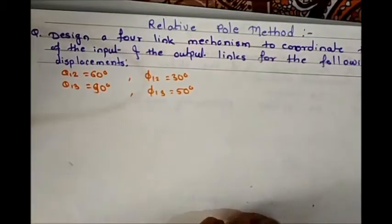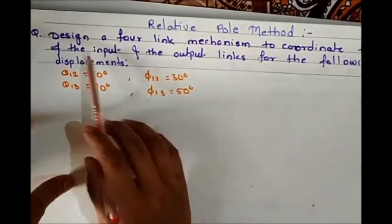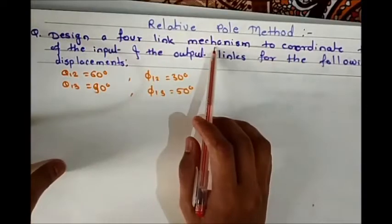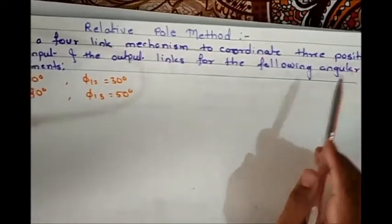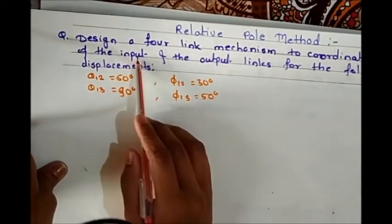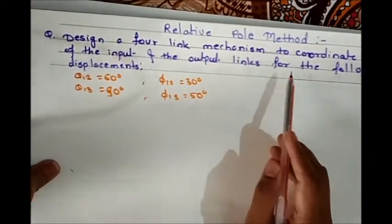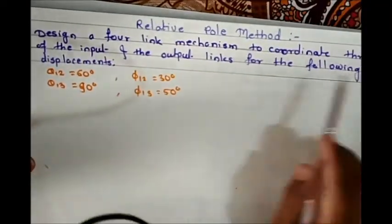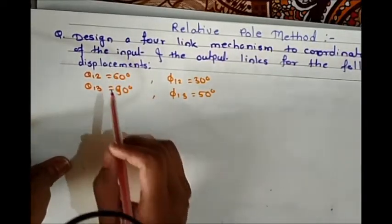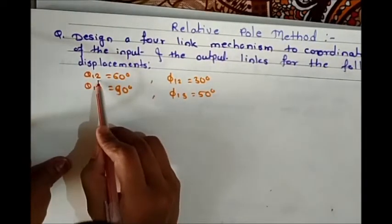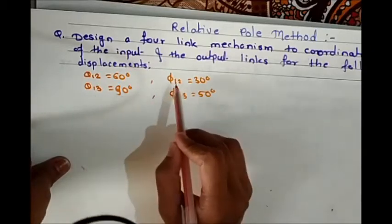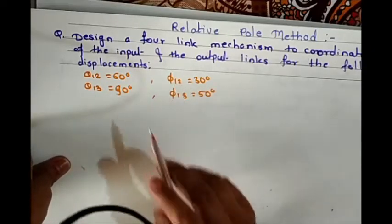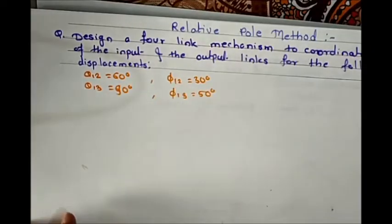Here we have the statement: design a 4-bar mechanism to coordinate 3 positions of input and output links. The following angular displacements are given: θ12 = 60°, θ13 = 90°, φ12 = 30°, and φ13 = 50°.